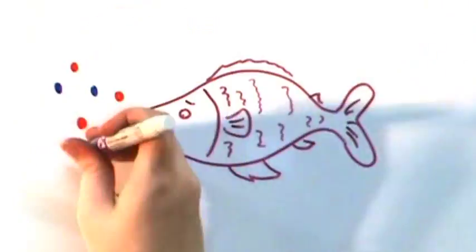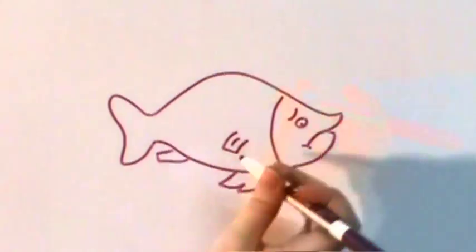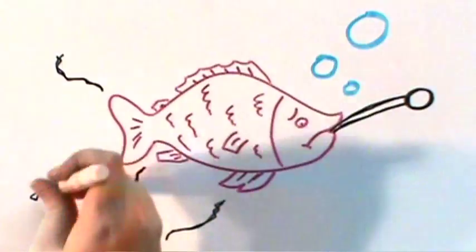Like any animal, as they eat, they produce waste. And no one likes to swim in their own poop, right? Fish are no different, and if their water isn't cleaned, they'll get sick and die.